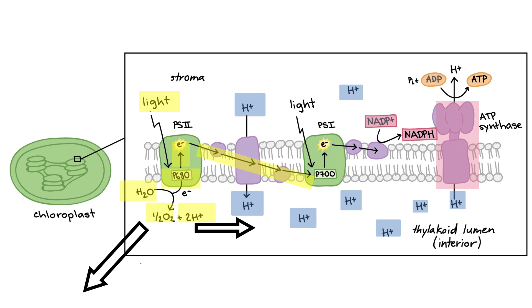The electron moving to a lower energy state eventually reaches P700, where P700 accepts it. Then light hits it again, and the electron gets excited and is passed on to other molecules, going to a lower energy state. The lost energy while the electron moves to a lower energy state is used to change NADP+ to NADPH.